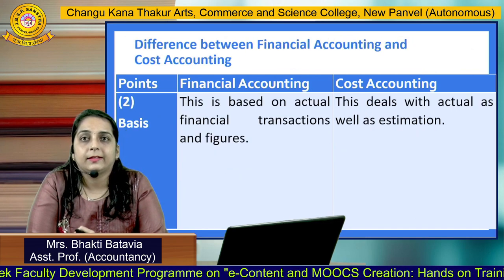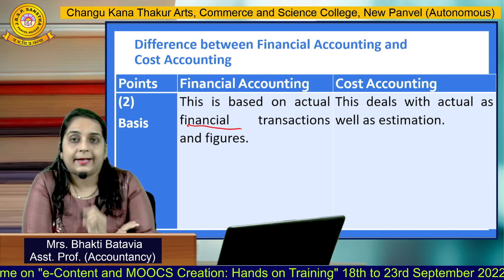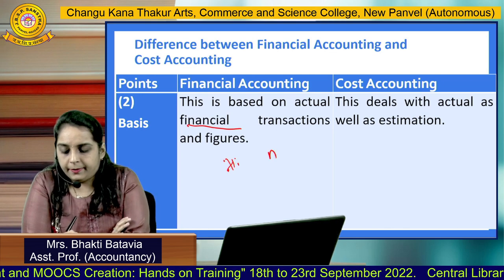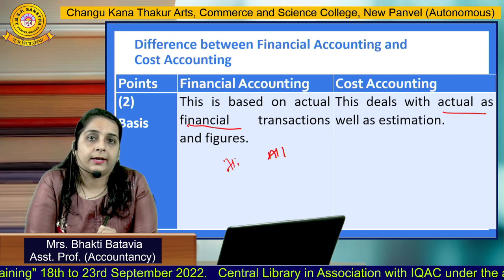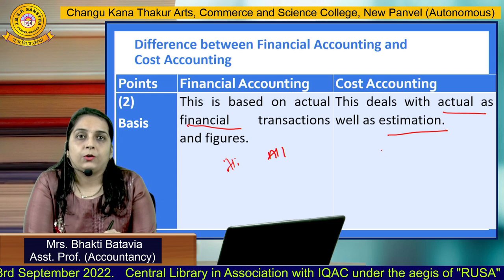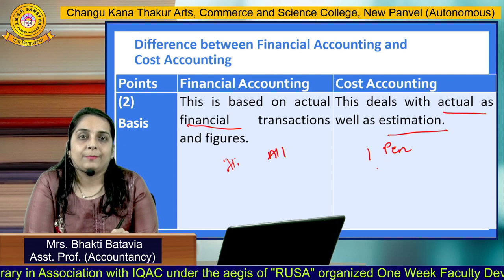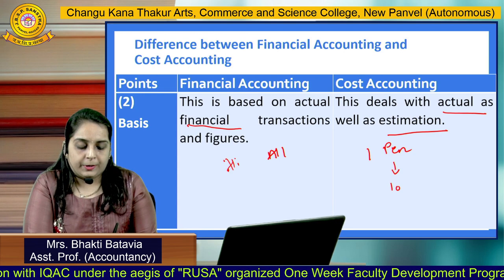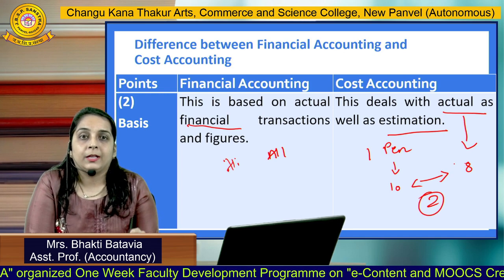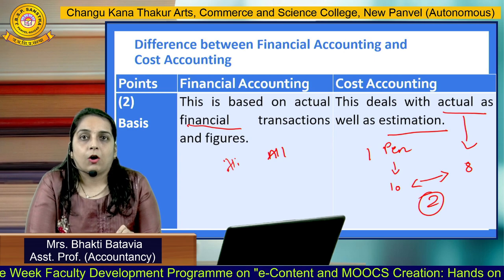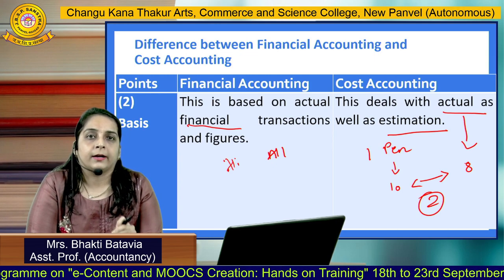The second point of comparison is the basis. Financial Accounting is based on all financial transactions — only actual transactions are recorded. In Cost Accounting, both actual transactions and estimated costs are recorded. For example, if we estimate manufacturing one pen costs ₹10, but the actual cost is ₹8, we have saved ₹2, showing we are controlling cost well. So Financial Accounting is based on financial transactions, while Cost Accounting is based on actual and estimated manufacturing costs.